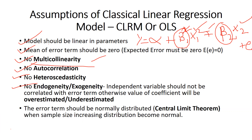Then we come to no endogeneity — exogeneity. Endogeneity means the independent variables should not be correlated with the error term. Otherwise, the value of the coefficient will be overestimated. When an independent variable is correlated with the error term, your beta value would be overestimated — meaning the beta value is reflecting whatever is in the error term due to endogeneity.